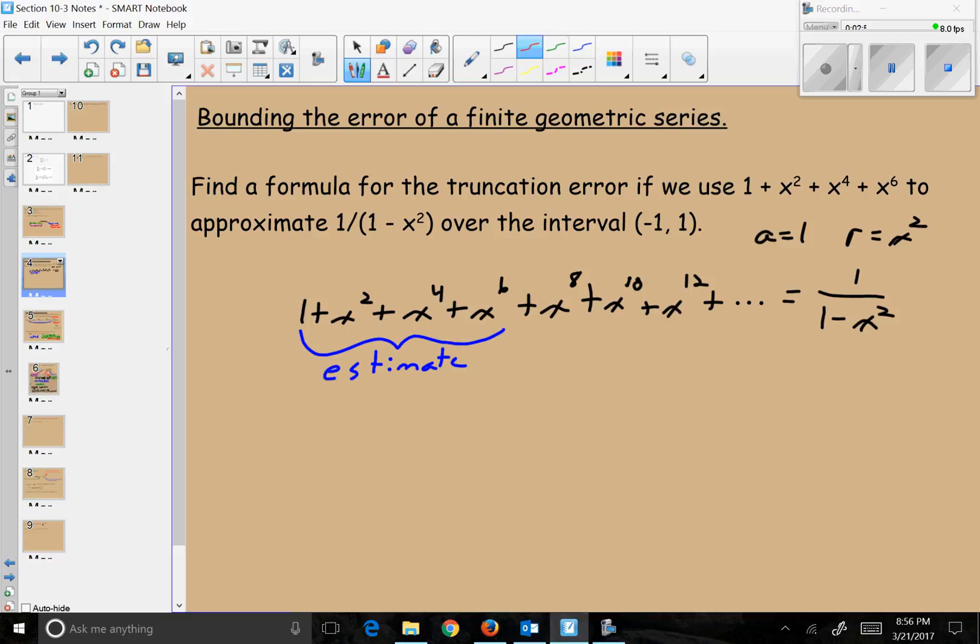What that means is if the infinite series is exact and I take away the estimate part, what's left is the error. We call this a truncation error because we've truncated our infinite series. In other words, we've shortened it. It sounds weird to say we've shortened an infinite series, but we took away our first four terms.